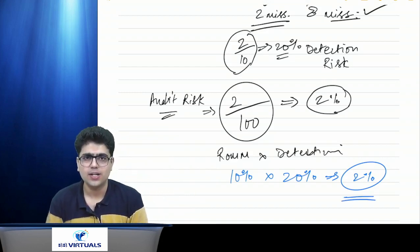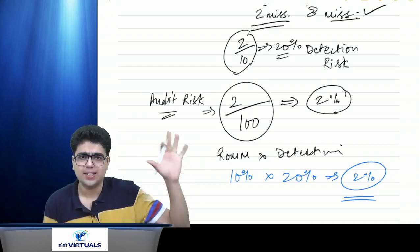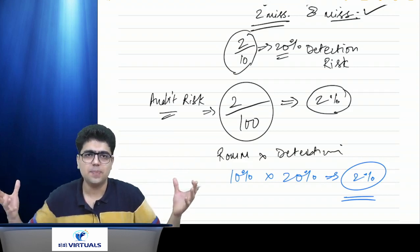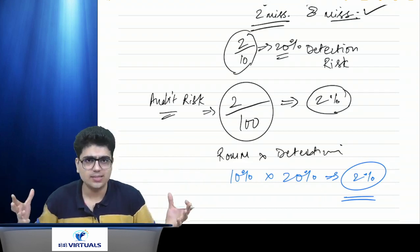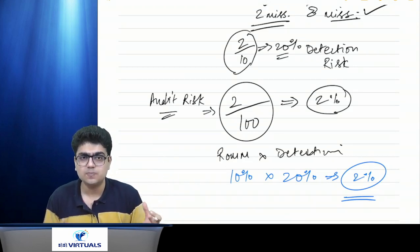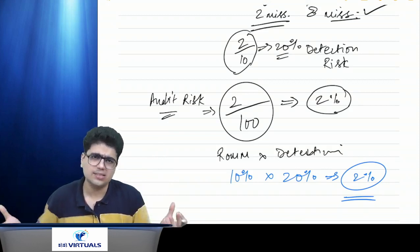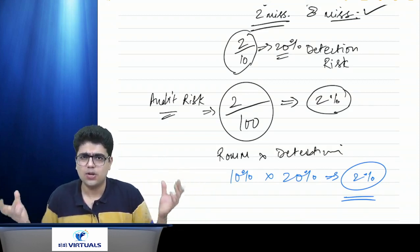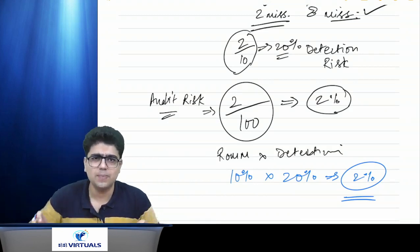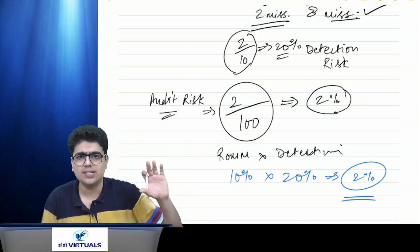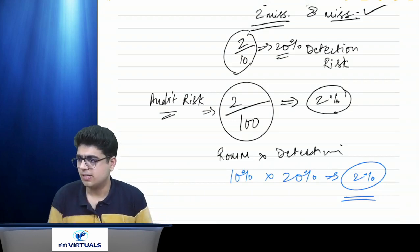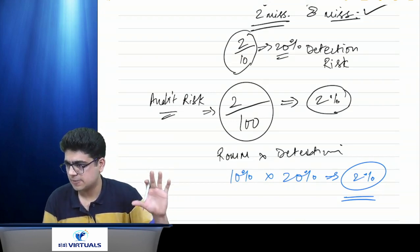Conceptually, it all depends on internal controls. If internal controls are effective, the risk of material misstatement is low. If I have to keep my audit risk to an acceptably low level, even if detection risk is a little higher, it will not greatly affect the auditor's judgment. This is all about audit risk.